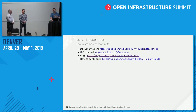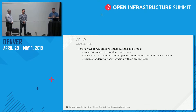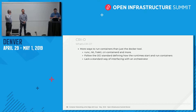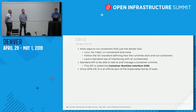I also want to speak about Cryo. If you're familiar with Docker, there are more ways to run containers — Docker was one of the first, but then others came: rkt, containerd, etc. They all wanted to follow the OCI implementation but lacked a standard way to interface with an orchestrator. The response was a standard API to handle container management — the Container Runtime Interface, CRI — and Cryo comes from that. Since 2018, it's an official part of Kubernetes. You can run containers directly without going through the Docker daemon.